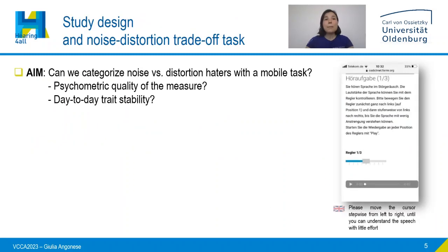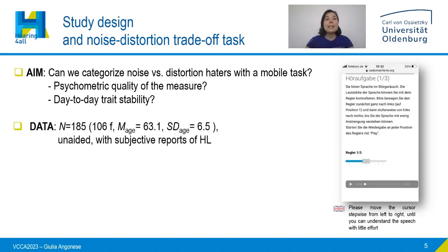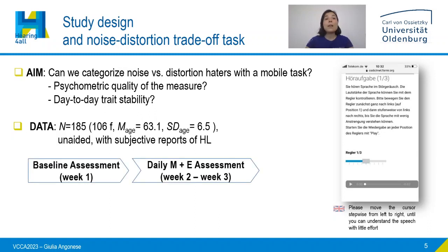We implemented a mobile task to categorize noise and distortion haters, and we will discuss its psychometric qualities and whether these measured preferences are stable along the days. We will do so in a dataset of 185 unaided older adults with subjective reports of hearing loss who participated in a three-weeks-long ecological momentary assessment study.